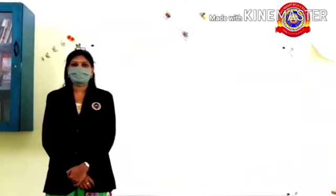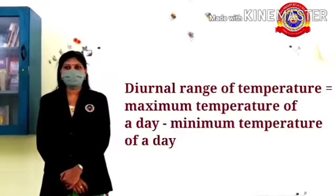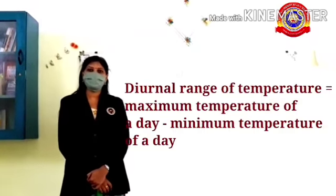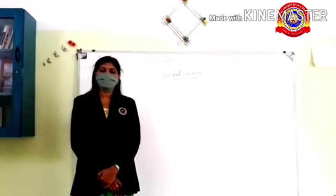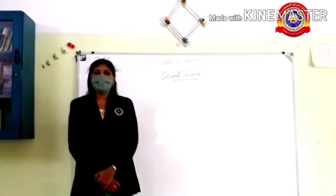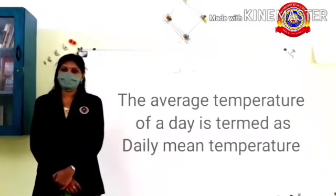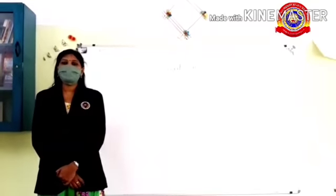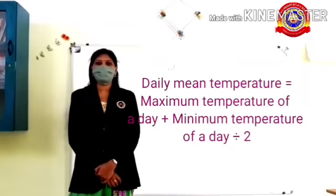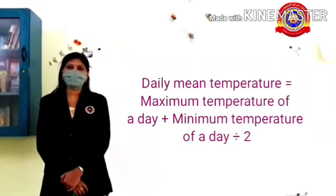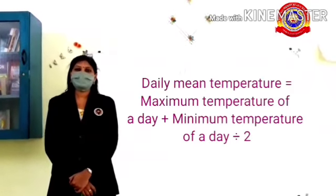How can we find the diurnal range of temperature? Diurnal range of temperature equals maximum temperature of the day minus minimum temperature of the day. Next is daily mean temperature. The average temperature of a day is termed as daily mean temperature. How can we calculate daily mean temperature? It equals maximum temperature of the day plus minimum temperature of the day, divided by 2.